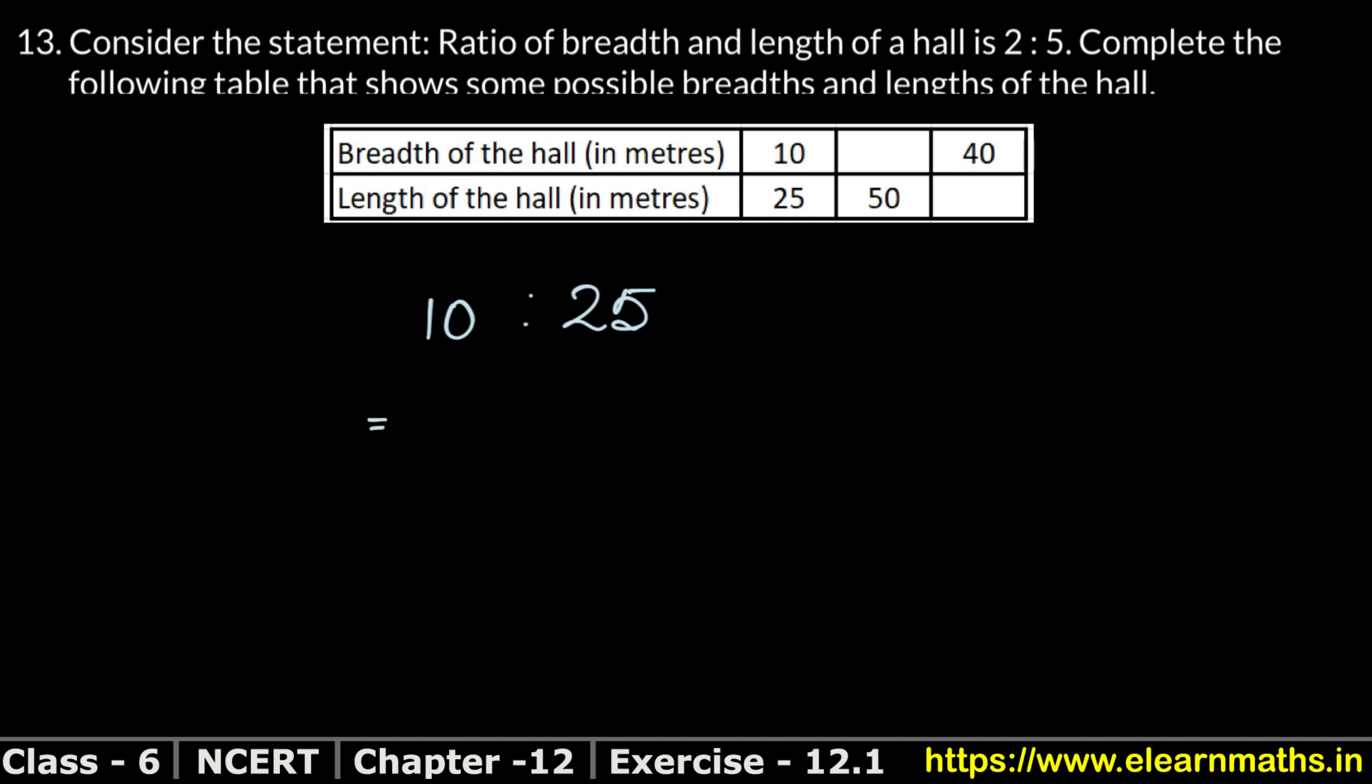If we solve this as 10 upon 25, and divide both by the same number - 5 twos are 10, 5 fives are 25 - we get the same ratio. This means it should come in this same ratio. Now we have 10 upon 25 equals blank upon 50 equals 40 upon blank.